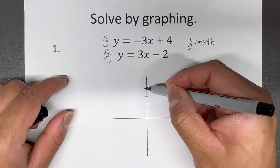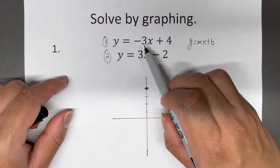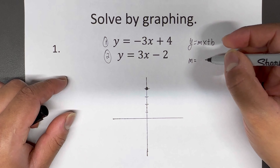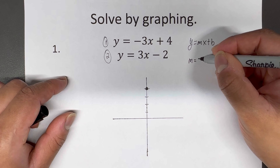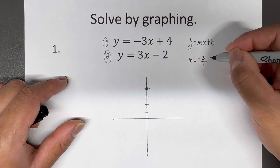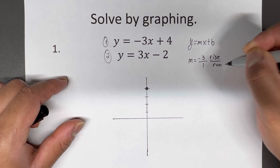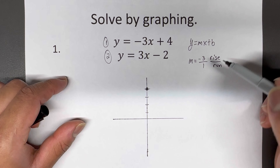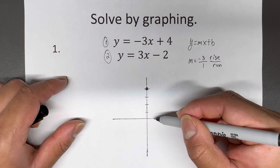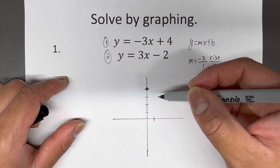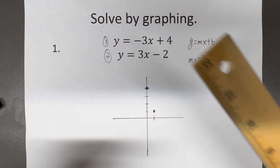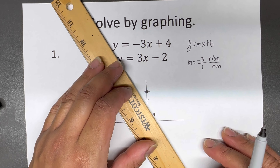Now we need the slope to see how steep this thing is. The slope is the M — the thing in front of the X. What I like to do is put the M over one if it's not already a fraction. That's rise over run. Since it's negative three over one, we're going to go down three and to the right one. Those are two points we can put on a graph, and we connect the dots to get our first line.